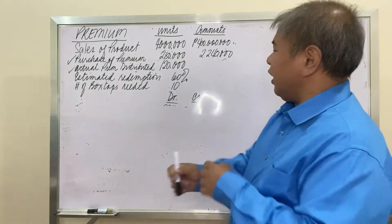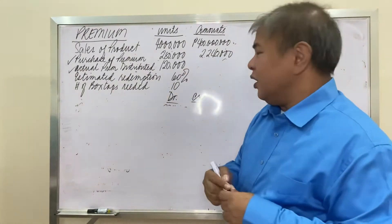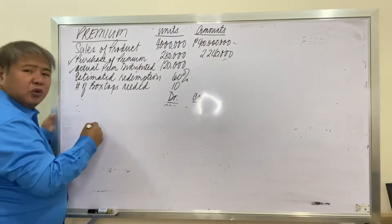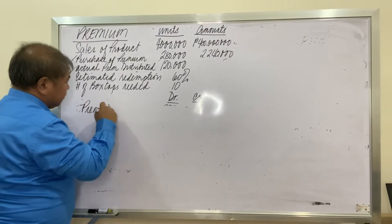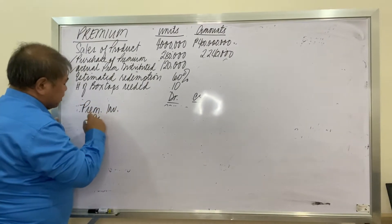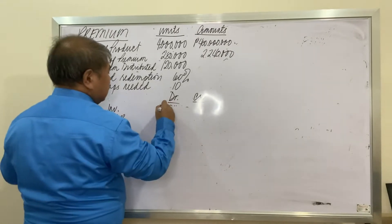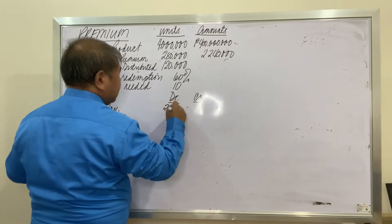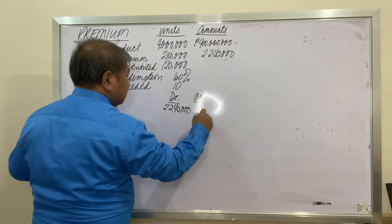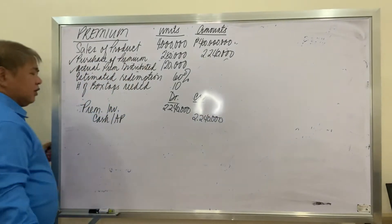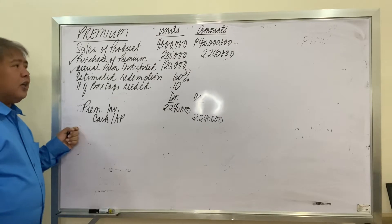Let us now make the entries for this transaction. First, the purchase of the premium. The entry is: debit premium inventory, and credit cash or accounts payable, for 2,240,000. This is the entry for the purchase of the premium.